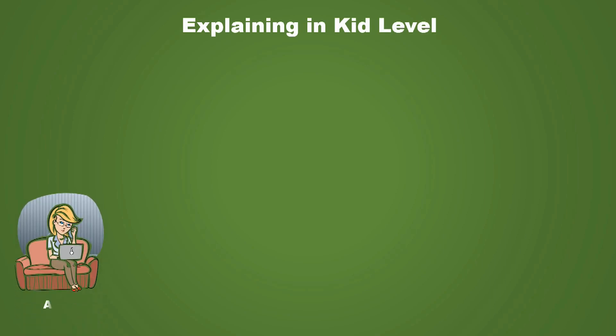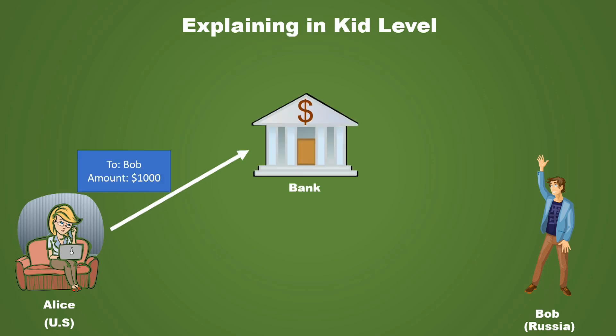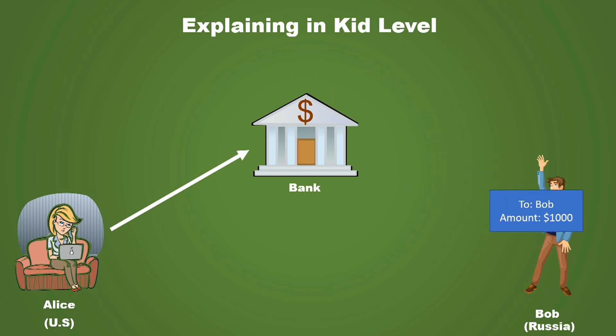So let's start at the kid level. Suppose there's a user called Alice and a user called Bob. Alice is in the US and Bob is in Russia. Suppose Alice wants to transfer a thousand dollars from her wallet to Bob's wallet. What Alice will do is log into her bank account, enter Bob's details, the amount she wants to transfer, then submit the transaction to the bank. The bank will transfer that money to Bob. Since this is an international transaction, this may take a minimum of three days to complete. Also, we are trusting a third party — in our case, this bank — and this bank is the one who verifies Alice, Bob, and the amount she transfers.